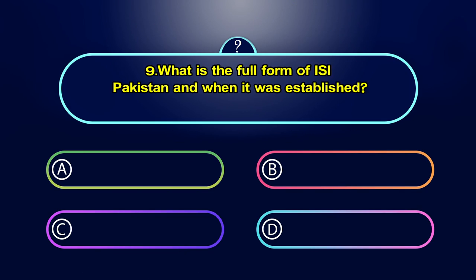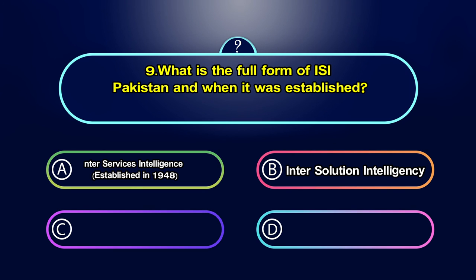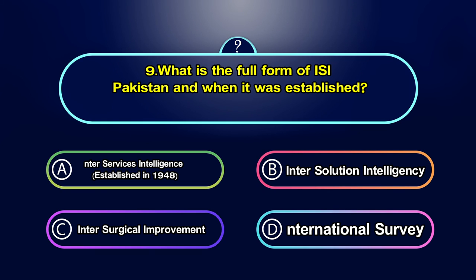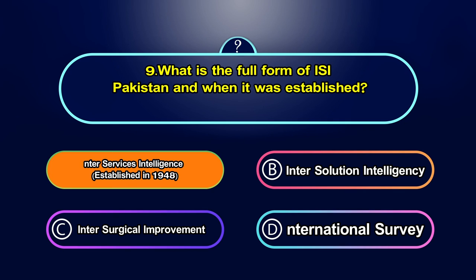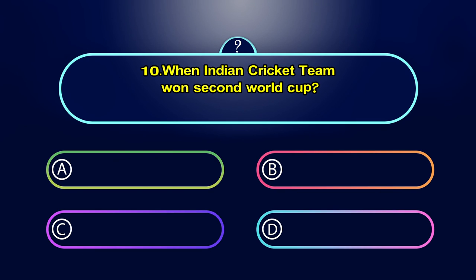What is the full form of ISI Pakistan and when was it established? Option A. Inter-Services Intelligence, established in 1948, Option B. Inter-Solution Intelligency, Option C. Inter-Surgical Improvement, Option D. International Survey. Your time starts now. The answer is A. Inter-Services Intelligence.